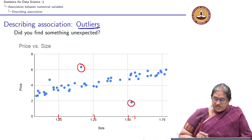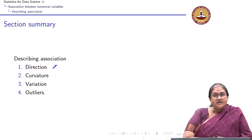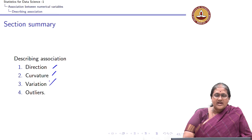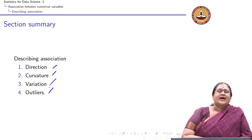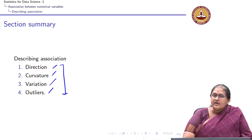In summary, when looking at association in a scatter plot, the key things to examine are: first, the direction — whether it is upward or downward; second, the form — whether it is linear or curved; third, the strength — whether it is tightly clustered or variable; and finally, whether there are any outliers. By now we should know how to plot a scatter plot and look for association between variables through visual inspection using these four key criteria.